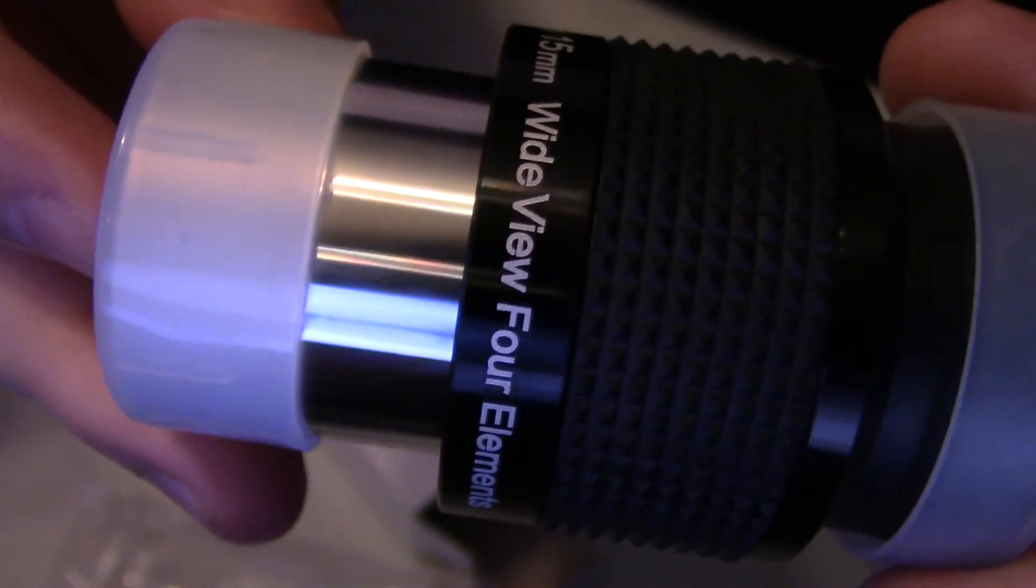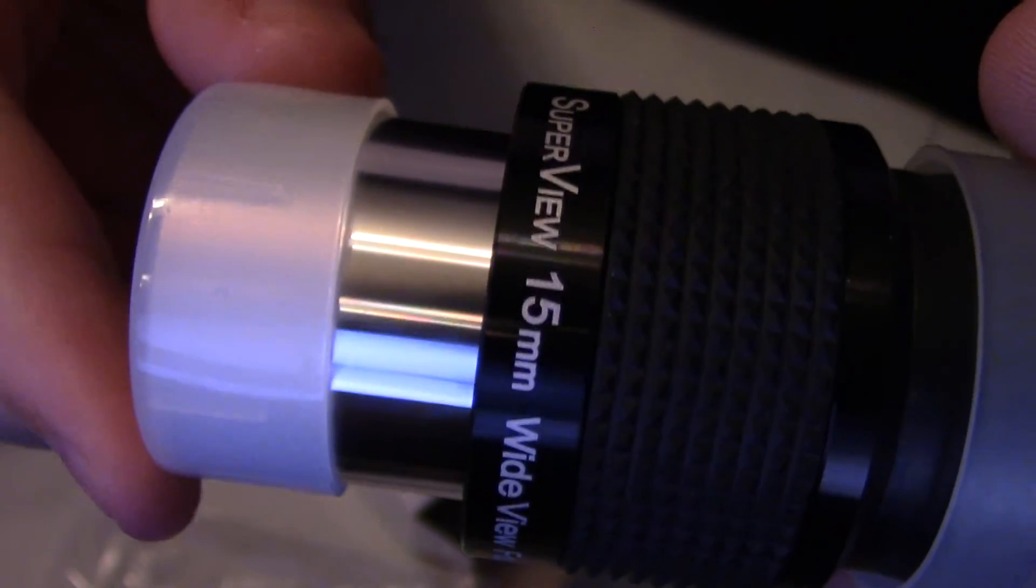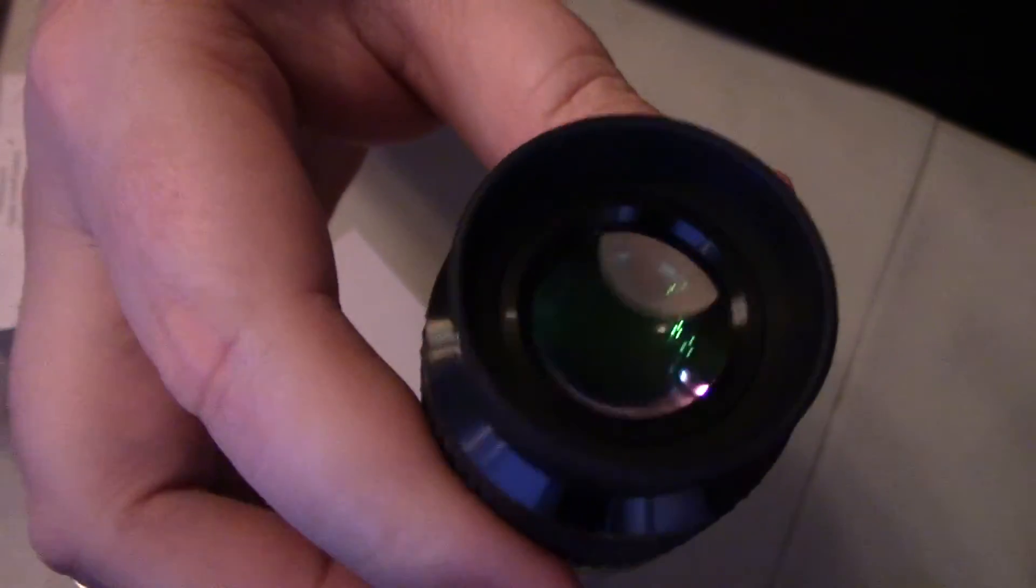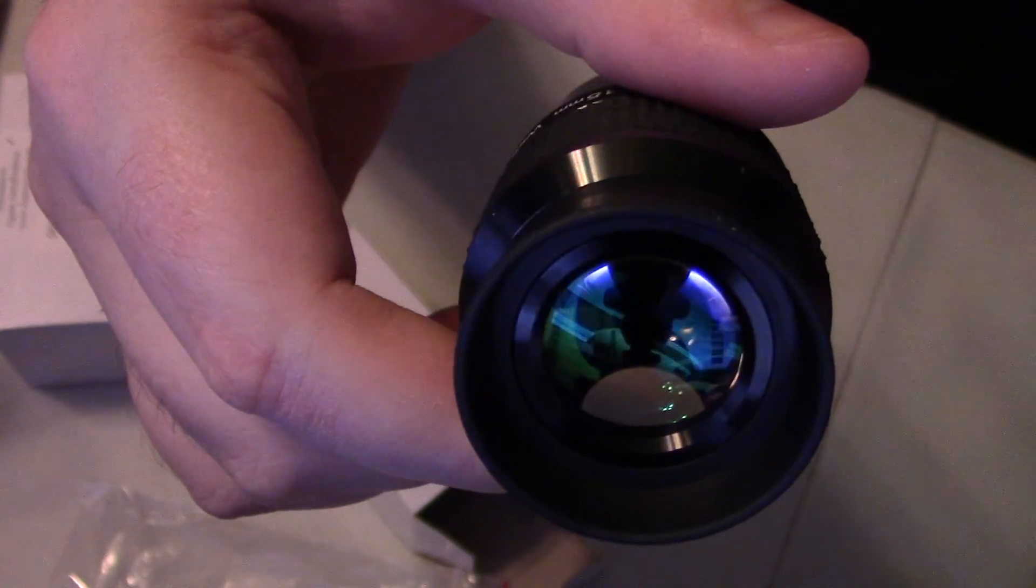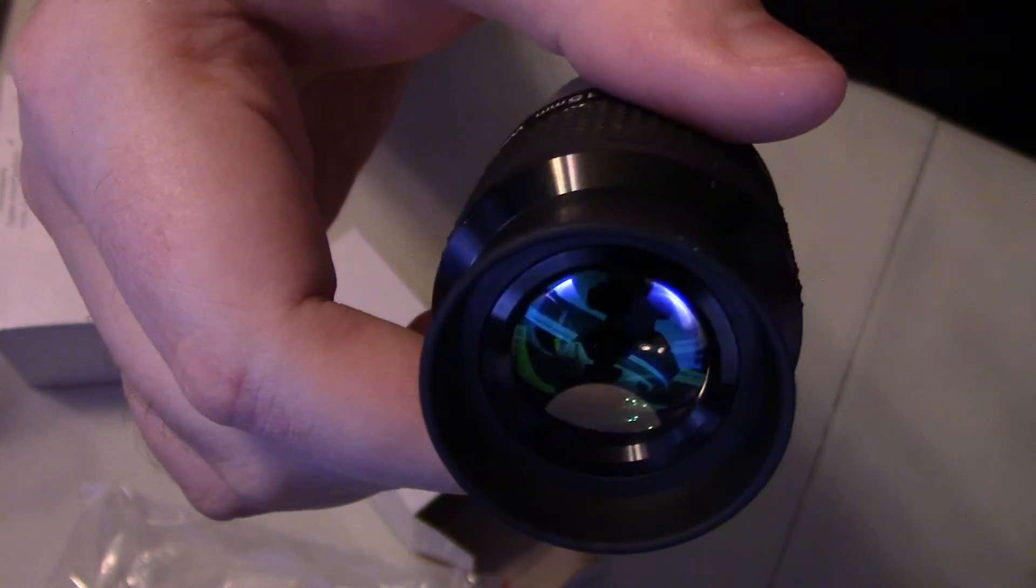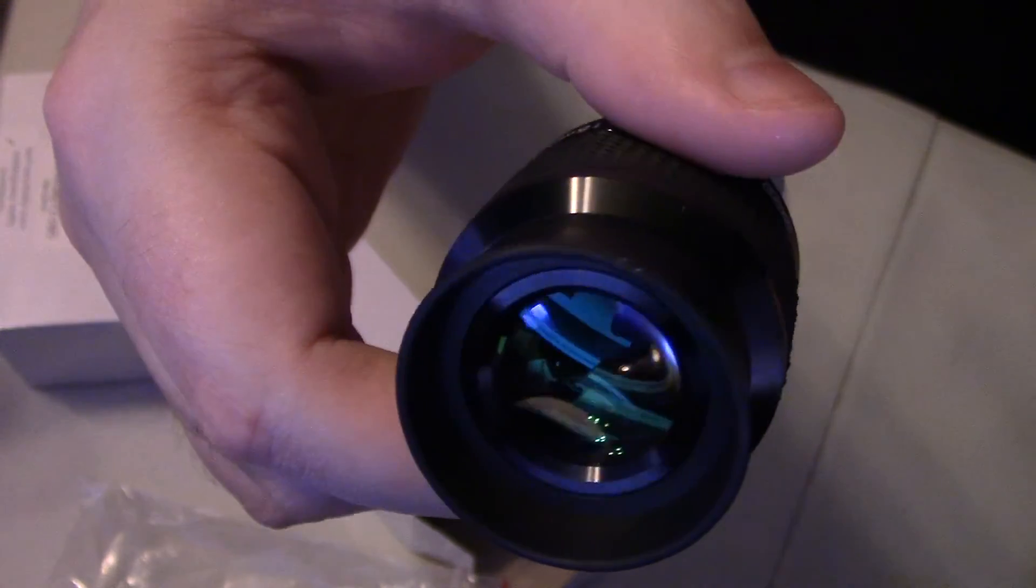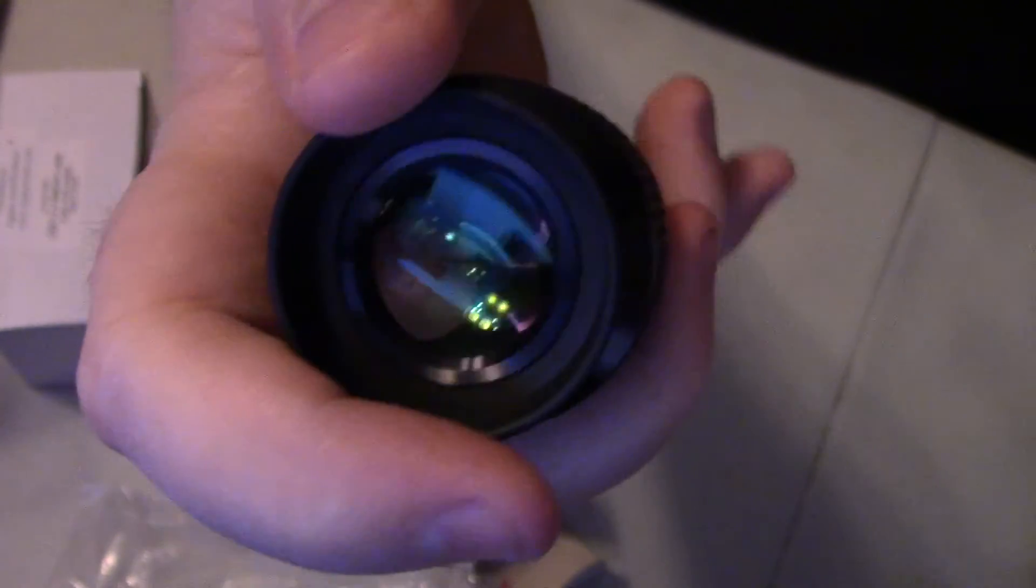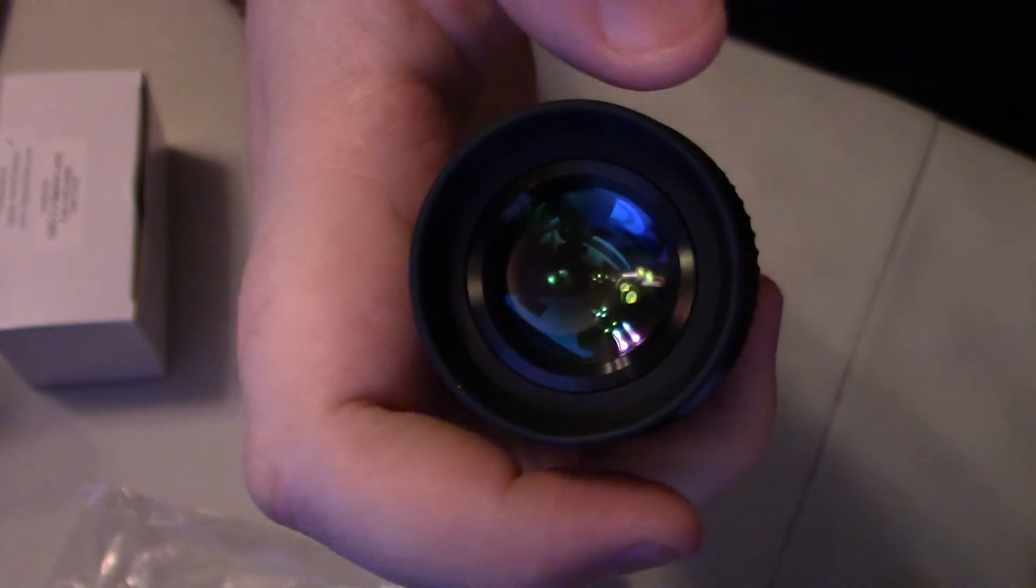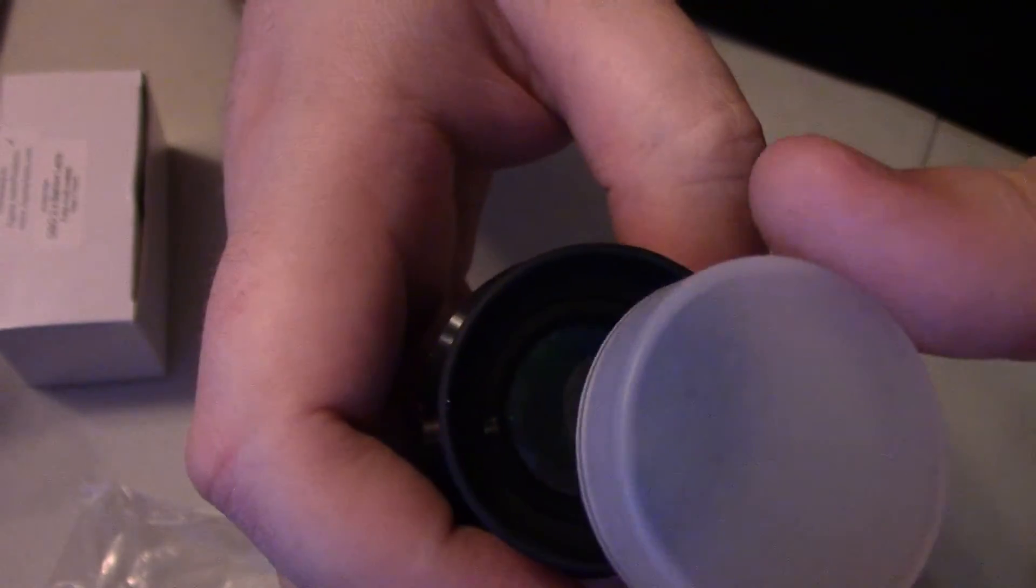So here's a close up of what the 15mm eyepiece looks like. This is a SuperView wide view eyepiece. This is what the lens looks like. As you can see it's a lot bigger and wider than the smaller eyepieces that come with the Celestron Power Seeker 80 EQ. So you don't have to squint your eyes into the little eyepiece to look into it. It's got a nice big lens to it.